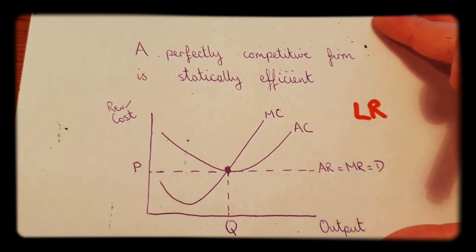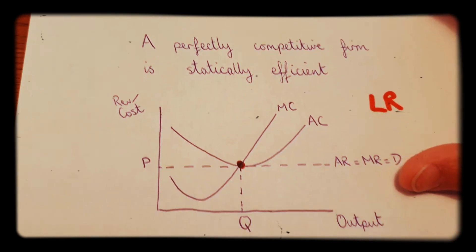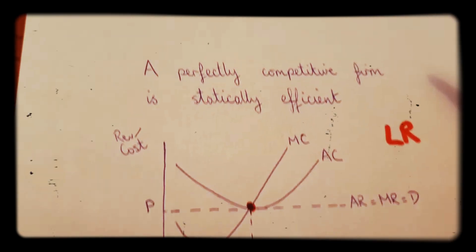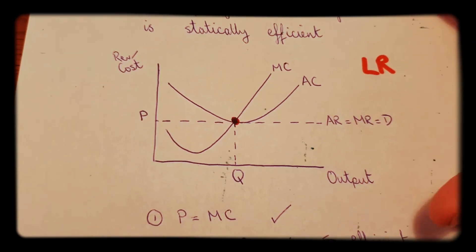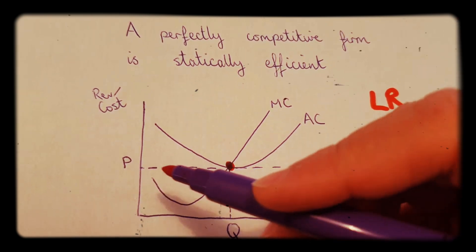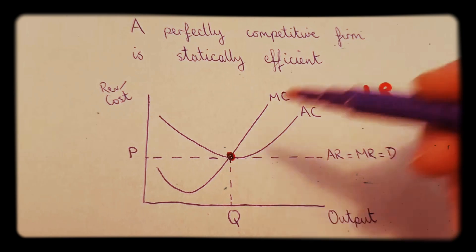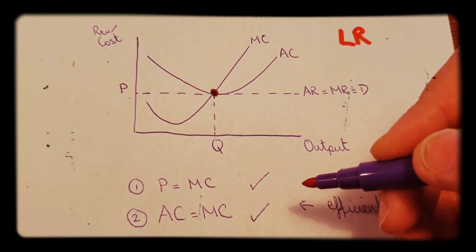Okay, so this is where the market would be in equilibrium. So have a look at that point and let's go back to these two conditions and see if they're satisfied. So we've got P equals MC for allocative efficiency. So there's the price and there's MC and they meet right there. So yes, it's allocatively efficient.